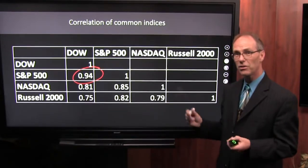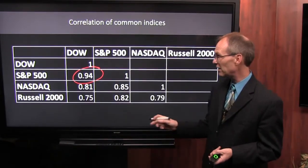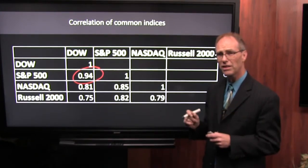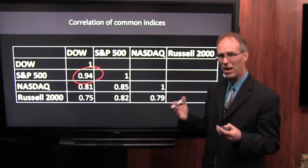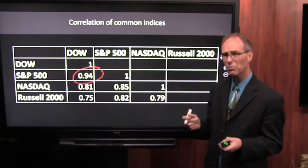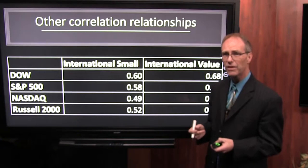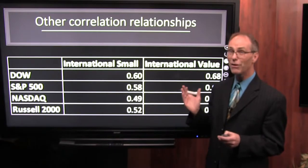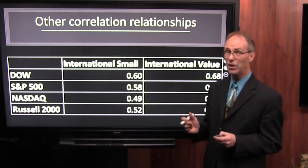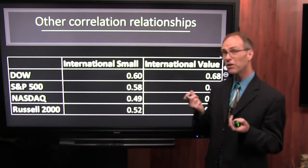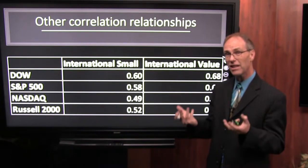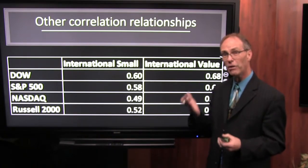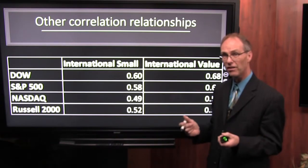You see a little bit lower correlation with the Dow and the NASDAQ because they're different-sized companies. The Dow is huge companies; NASDAQ is a little bit smaller and a little bit more tech heavy. Now if we look at a portfolio, we want even lower correlations than that, because that's what adds to diversification. That's what gives us the reduction in risk — when things don't move in tandem with each other.